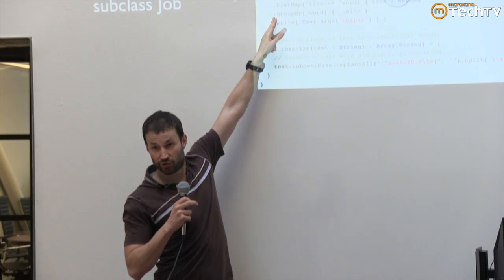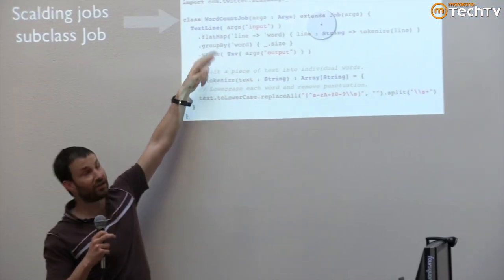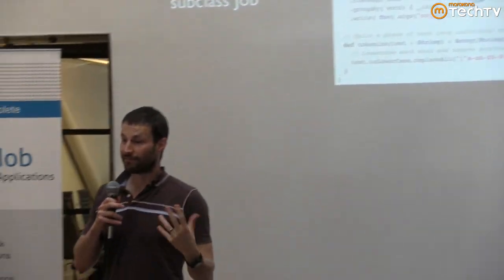In MapReduce, you have the map, then the shuffle and group, then some reduction. In this case, we're grouping on the word itself, so each word will be sent to a different list. All the hellos will be in one list, all the hows will be in one list, all the yous will be in one list, and so on.